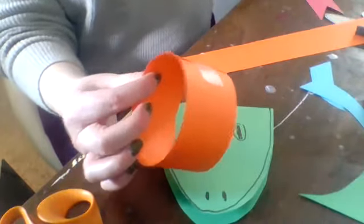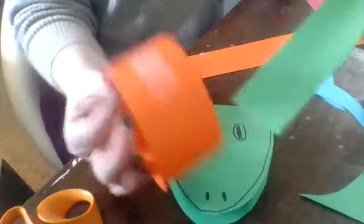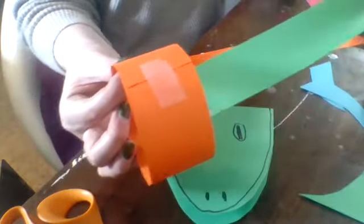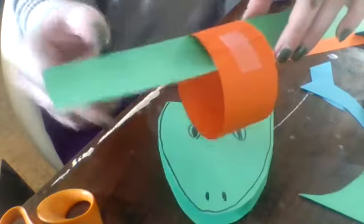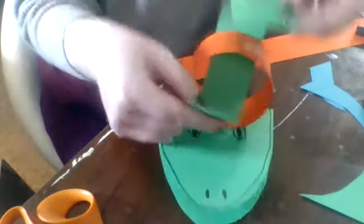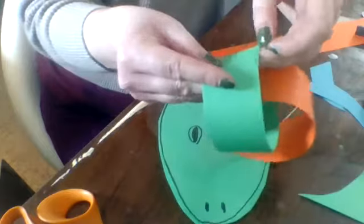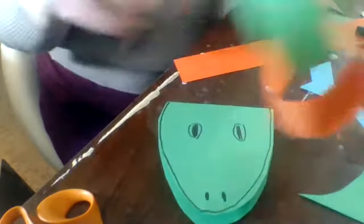The key is when you do your second one, before you make it into a circle, you want to take your paper and put it through your first circle like that so it catches and it makes a chain. So I'm going to do the same thing, fold it back over and I'll put a piece of tape.